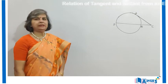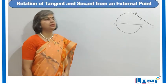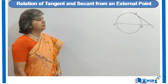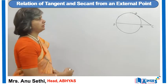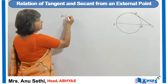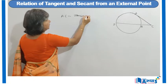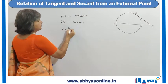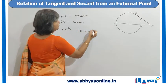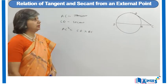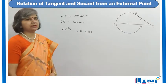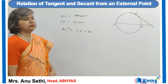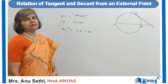Now, let us discuss the relation between the tangent and secant for a circle. In the diagram, we have drawn a tangent and a secant, where AC is the tangent and CD is the secant. The relation is AC square is equal to CD into BC. That means the tangent square is equal to the product of the secant CD into the external segment BC.